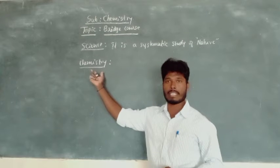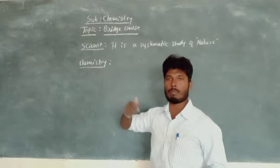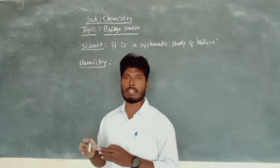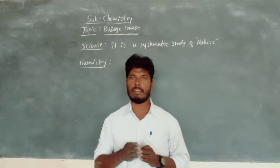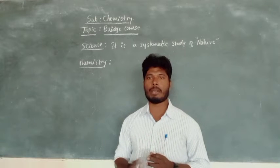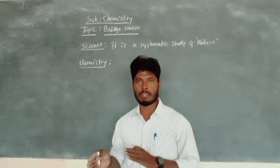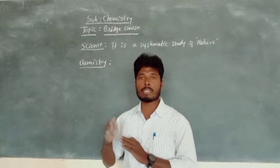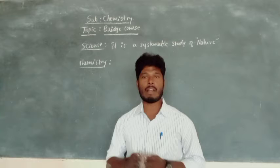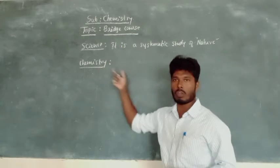Basically, this chemistry originated in Egypt. In Egypt, some people were trying to convert metals like iron, copper, silver, and so on into gold. Those people were named as alchemists. From that word, chemistry originated.